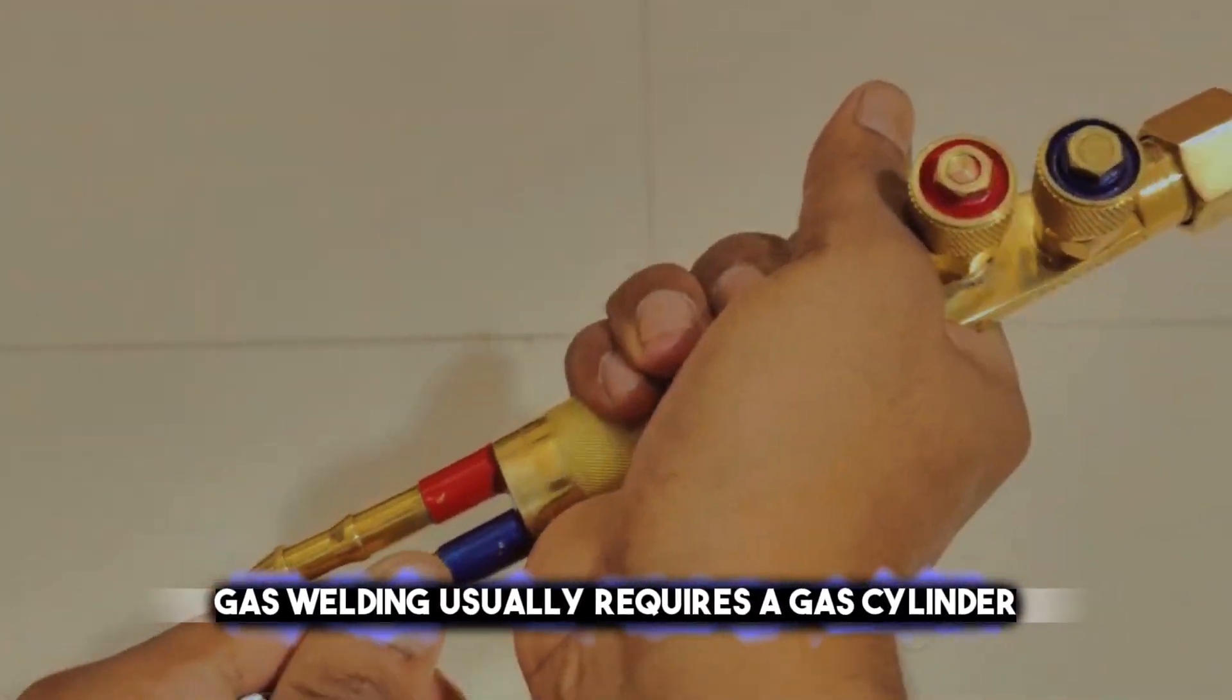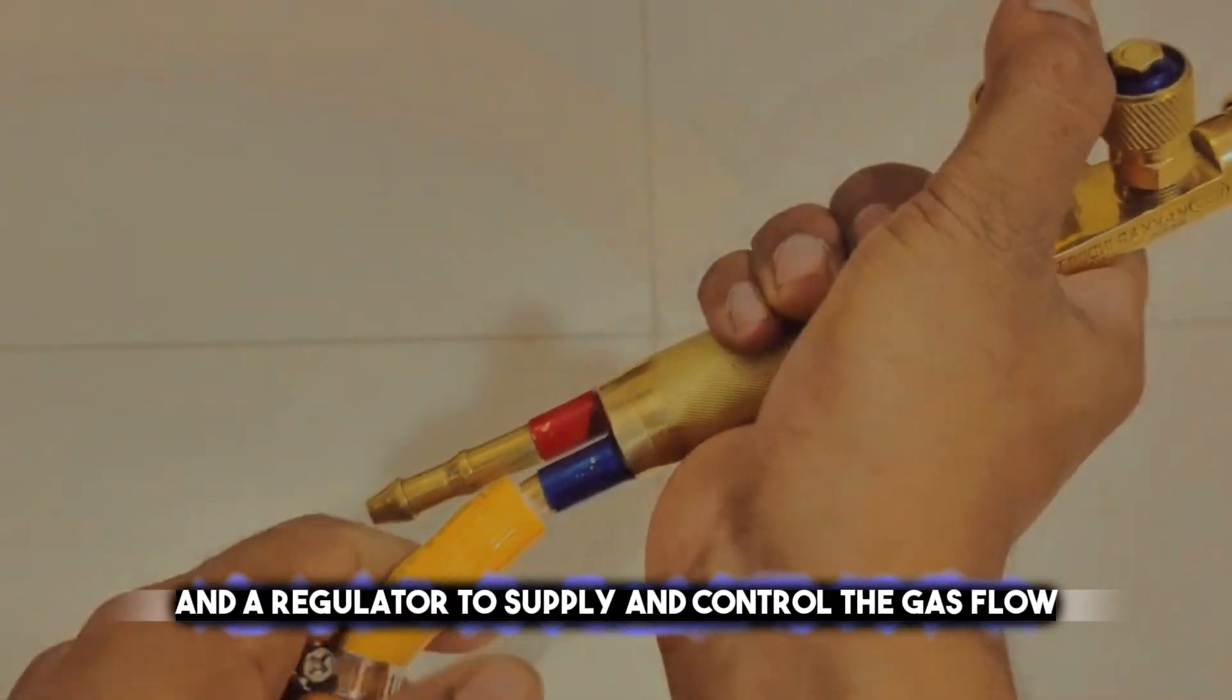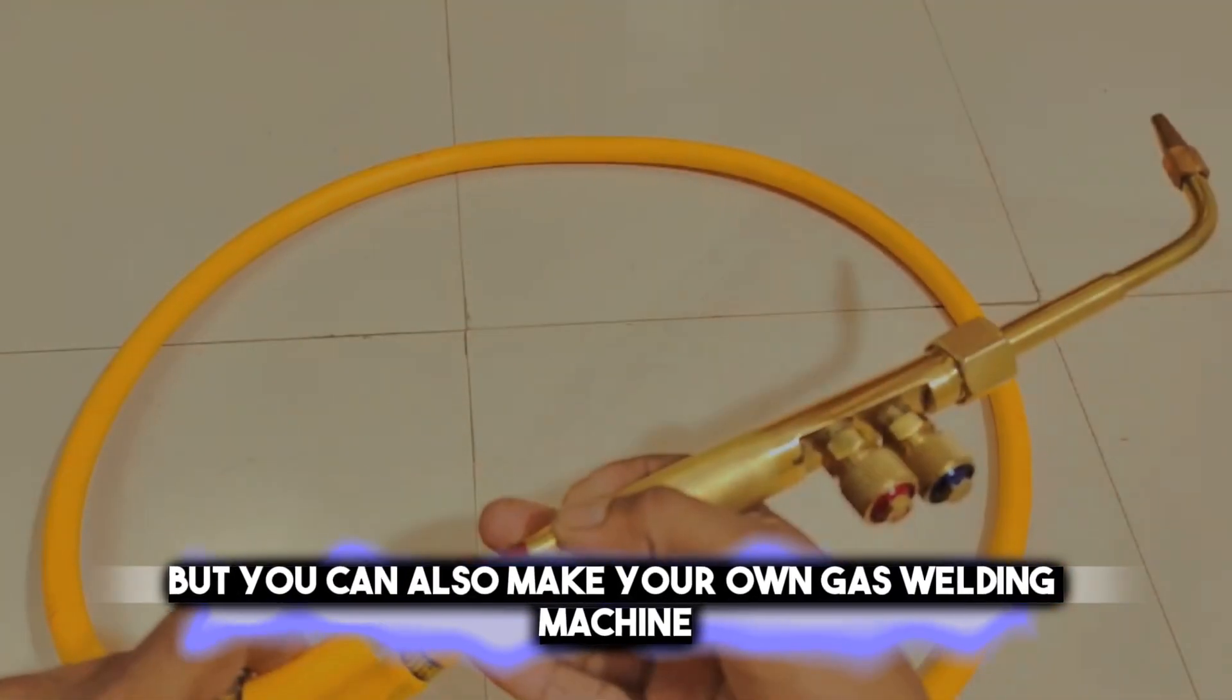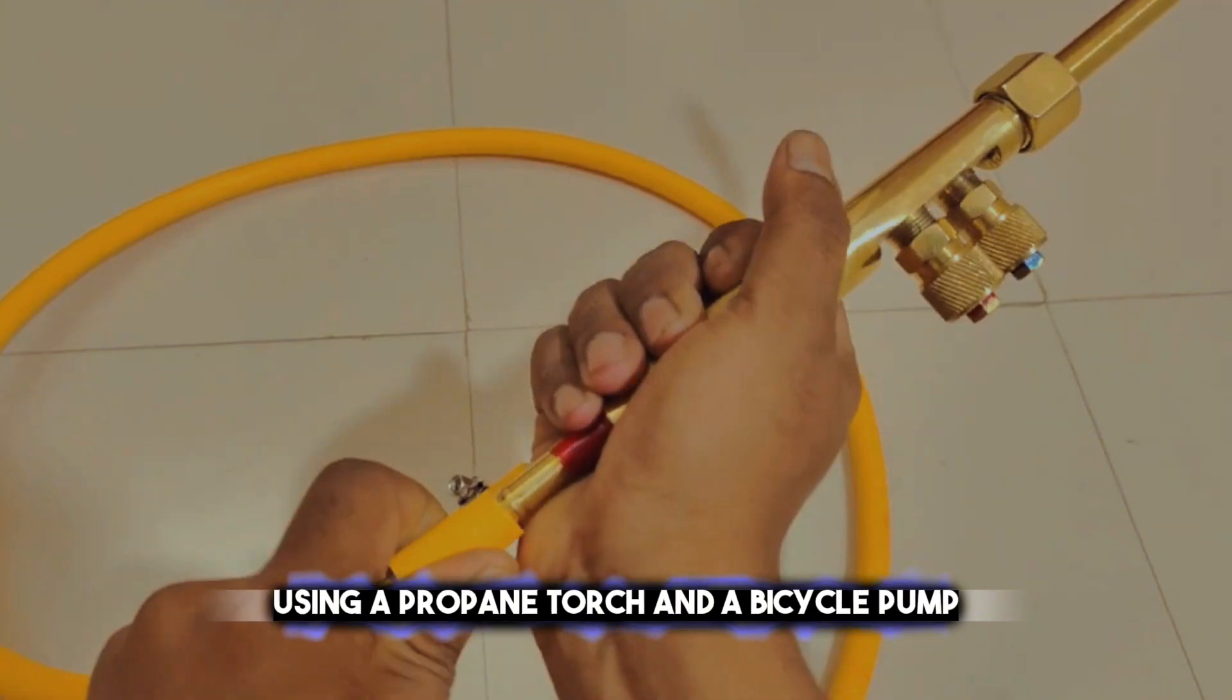Gas welding usually requires a gas cylinder and a regulator to supply and control the gas flow, but you can also make your own gas welding machine using a propane torch and a bicycle pump.